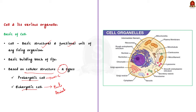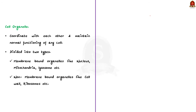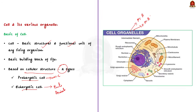Now let us see the components of the cell. The components of the cell are also called cell organelles and there are two types: membrane-bound organelles and non-membrane-bound organelles. Examples of membrane-bound organelles are nucleus, mitochondria, and lysosome. Examples of non-membrane-bound organelles are cell wall and ribosomes.